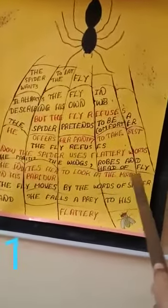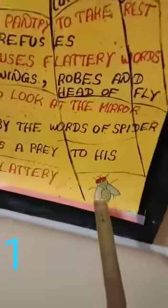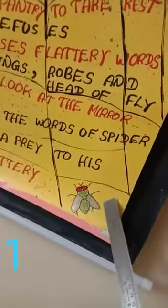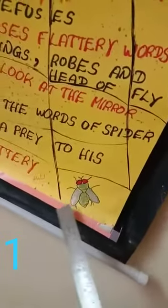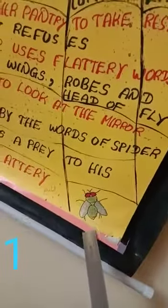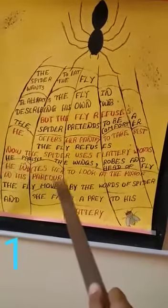The spider praises the wings, robes, and head of the fly. He says the fly's wings are like silver from above. He then invites her to look at the mirror in his parlor. So the spider prizes the wings, robes, and head of the fly and invites her to look at the mirror.